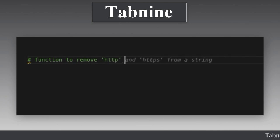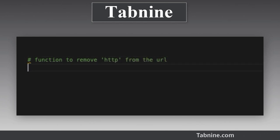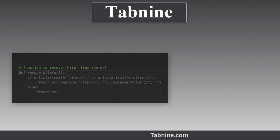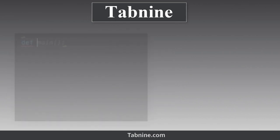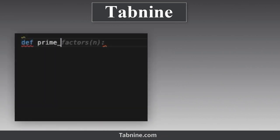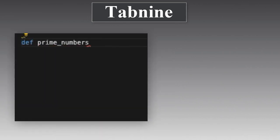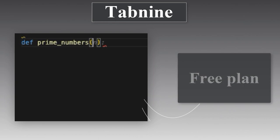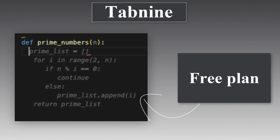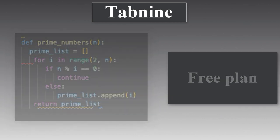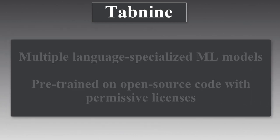Tab9 then creates customized suggestions that should be a good match for the rest of the code you're writing. Tab9 Pro delivers whole-line and full-function code completions, natural language to code, all at around half the price of ChatGPT Plus currently, and it has a free plan too.